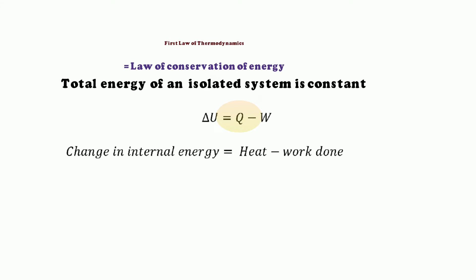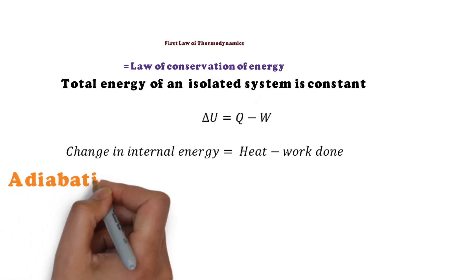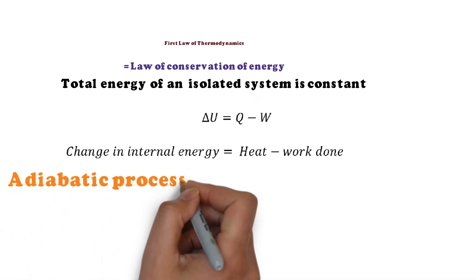This Q represents the amount of heat leaving or entering the system. This minus W represents the work done on the system by the surrounding, or if positive, the work done by the system on the surrounding.